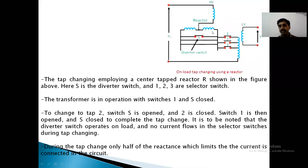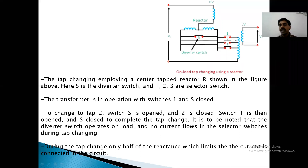The tap changing employs a center-tapped reactor as shown in the figure. Here S is a diverter switch, and 1, 2, 3 are selector switches. Initially the transformer is in operation with S and switch 1 closed — S1 closed — so the supply runs through S1 with the entire winding included. Now I want to select fewer turns, so the procedure is: open switch S, close switch 2, then open switch 1, then close switch S. Now the power supply is through S and 2.